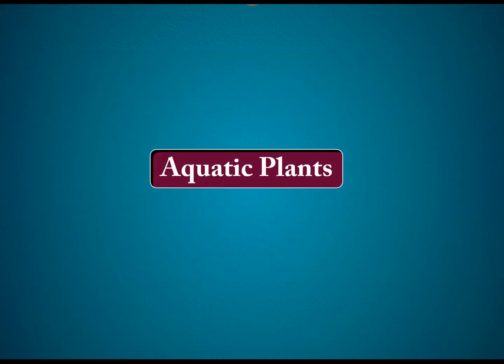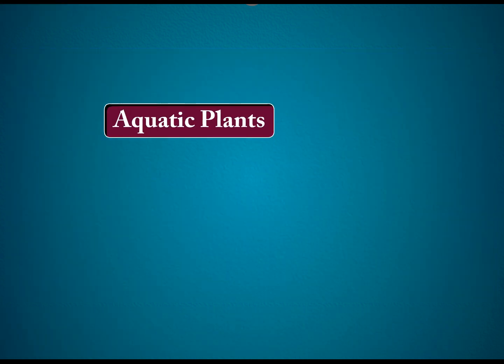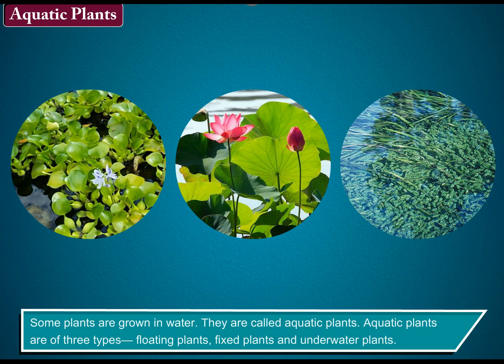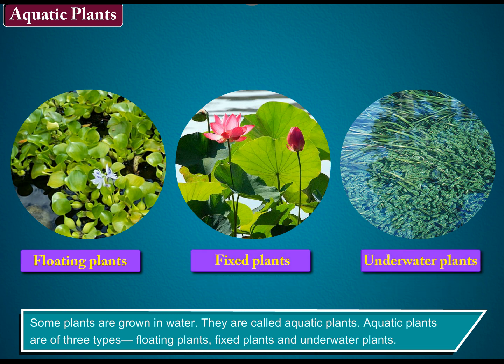Aquatic plants: some plants are grown in water. They are called aquatic plants. Aquatic plants are of three types: floating plants, fixed plants, and underwater plants.